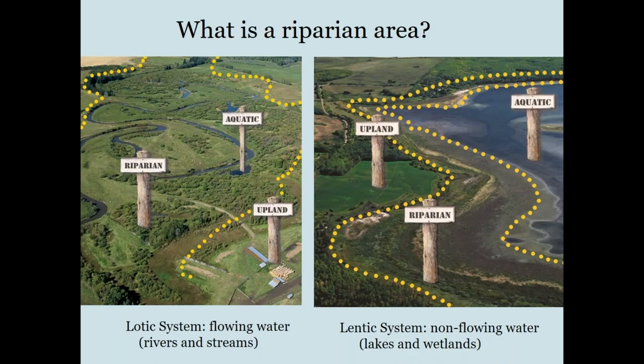Getting back to riparian areas — these are the green zones around the lakes and wetlands, the emerald threads of vegetation that border rivers and streams. You may have heard them called a floodplain, shoreline, bottomland, or streambank. Riparian areas are found on both non-flowing water bodies, or lentic sites, and flowing water systems, or lotic sites. They are the transition zones between the open water aquatic zone and the uplands. On lakes and wetlands, riparian areas extend into that emergent zone where vegetation like cattails and rushes grow.